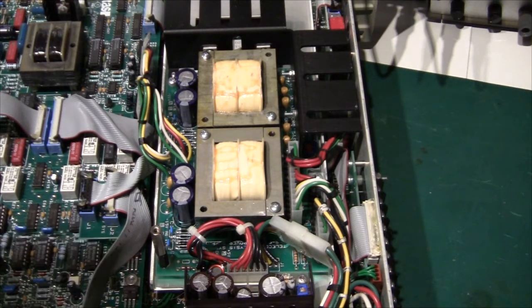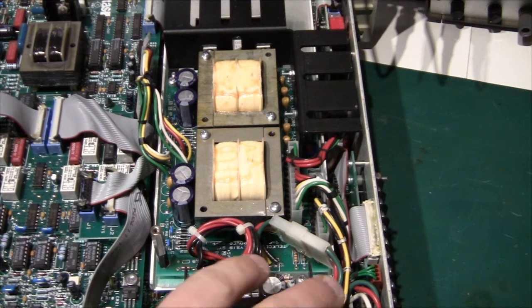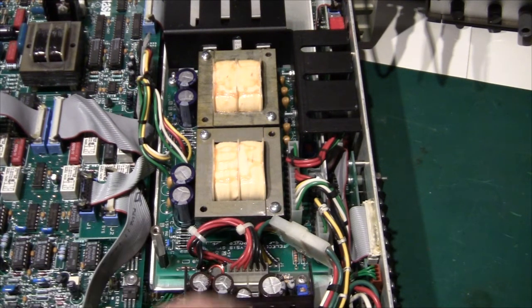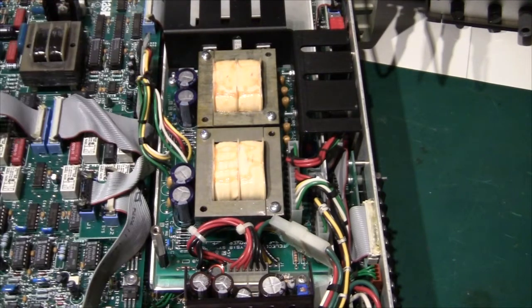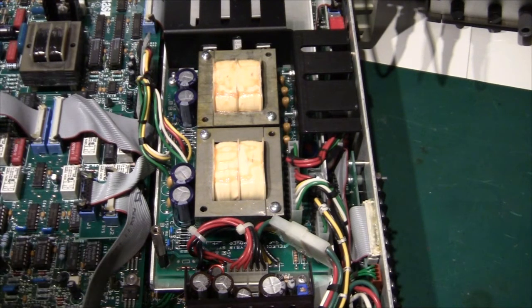Yeah, why do they do it like this? I believe the switch mode power supply delivers 5 volts, that is for all the digital stuff. And then these two transformers here, they will supply the plus minus power supplies for the op-amps and for all the analog stuff.